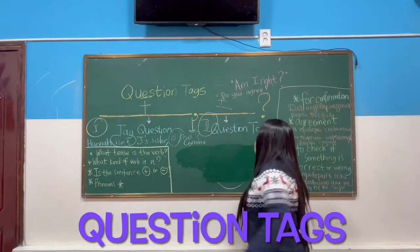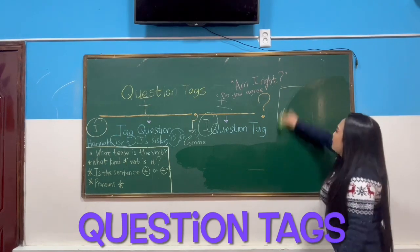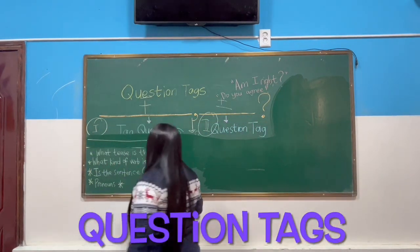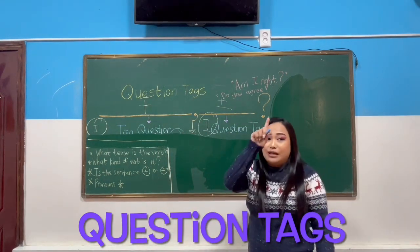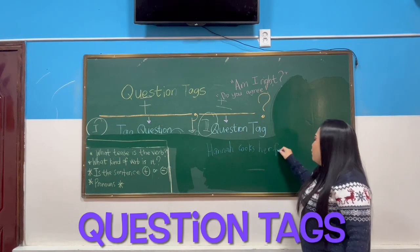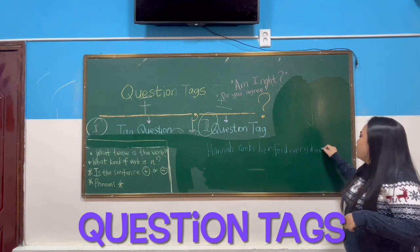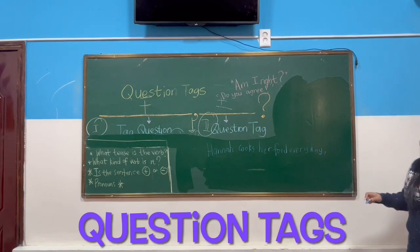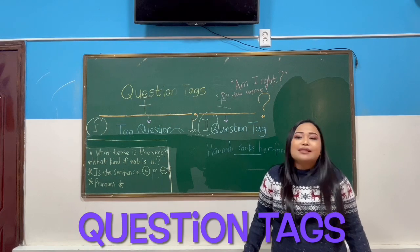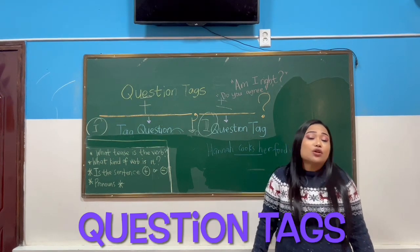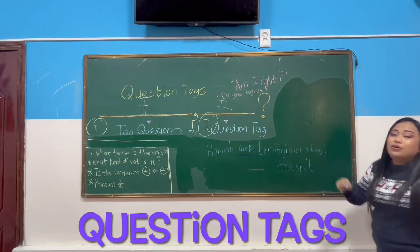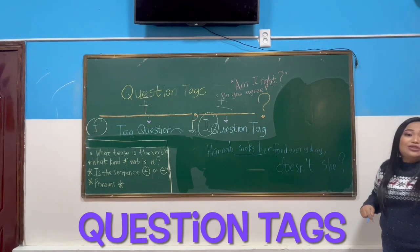Let's have some examples. Look at the board. 'Hannah cooks her food every day.' What tense is the verb? Present simple. What is the negative of 'Hannah cooks'? It's 'Hannah doesn't.' So what will be the auxiliary? 'Doesn't.' And what pronoun is Hannah? 'She.' So the question tag will be 'doesn't she.' You need to be careful with this.